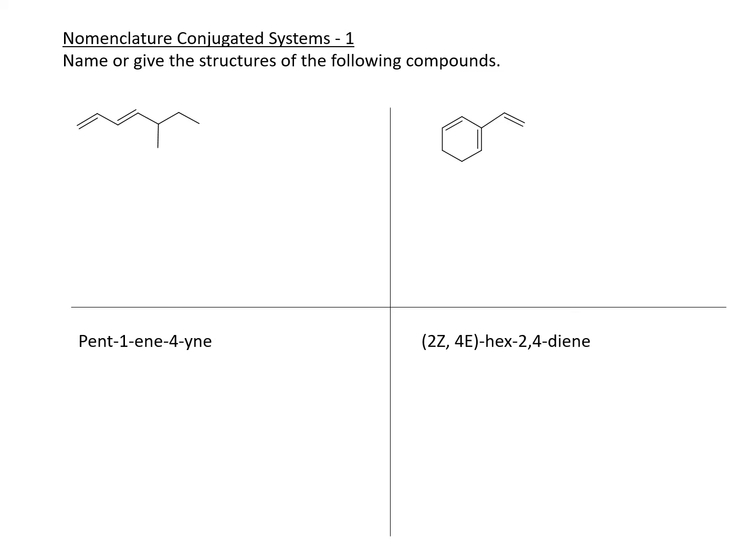Name or give the structures of the following compounds. These are all alkenes or alkynes because we are in conjugated systems. So for the first one, let's go ahead and number everything out.